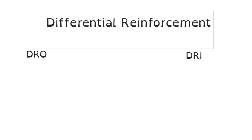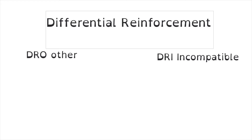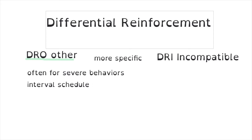There are two subtypes of differential reinforcement of alternative behaviors: DRO and DRI. DRO is differential reinforcement of other behaviors. Although this sounds similar to DRA, there are more specific elements related to the schedule. Differential reinforcement of other behaviors reinforces all other behaviors besides the target behavior. It's often used for severe behaviors, and we always incorporate an interval schedule with DRO — interval schedules are required. We use IRT, inter-response time, to come up with this interval schedule.